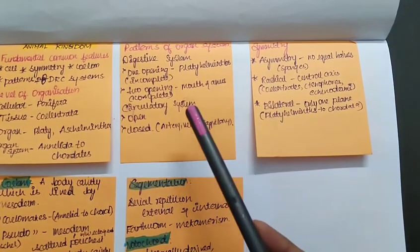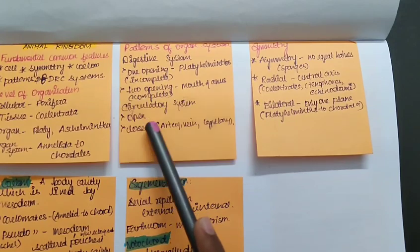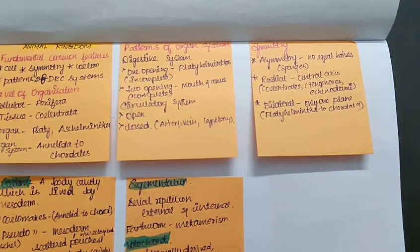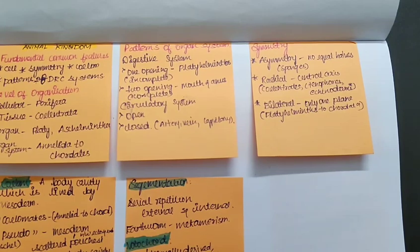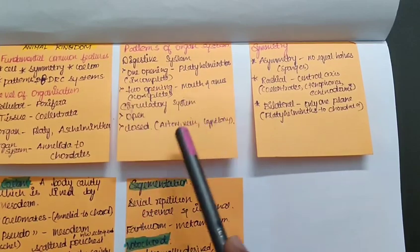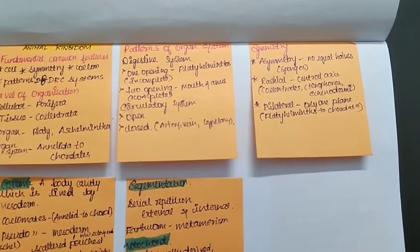Let's talk about the circulatory system. The circulatory system is of open and closed type. Open is one in which the heart is pumping the blood that just passes into the body without any specific arteries or veins, which are seen in the closed system. So in the closed system we will have artery, vein and capillary, as for us humans.